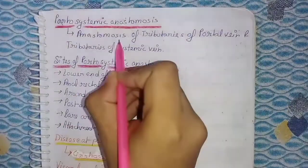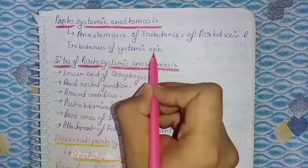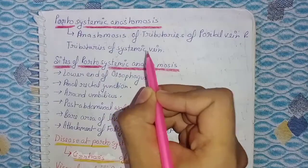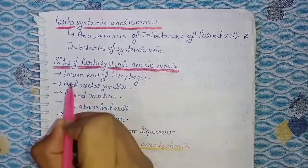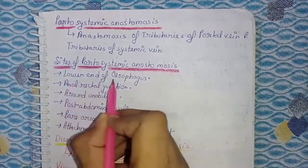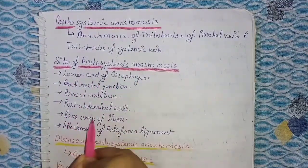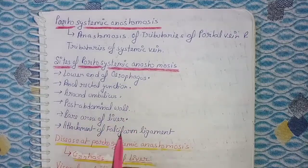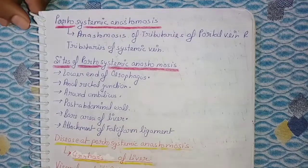What is portosystemic anastomosis? Anastomosis of the tributaries of the portal vein and the tributaries of the systemic vein together form portosystemic anastomosis. Sites of portosystemic anastomosis: lower end of esophagus, anorectal junction, around the umbilicus, posterior abdominal wall, and the bare area of the liver at the falciform ligament. The disease associated with portosystemic anastomosis is cirrhosis of the liver.